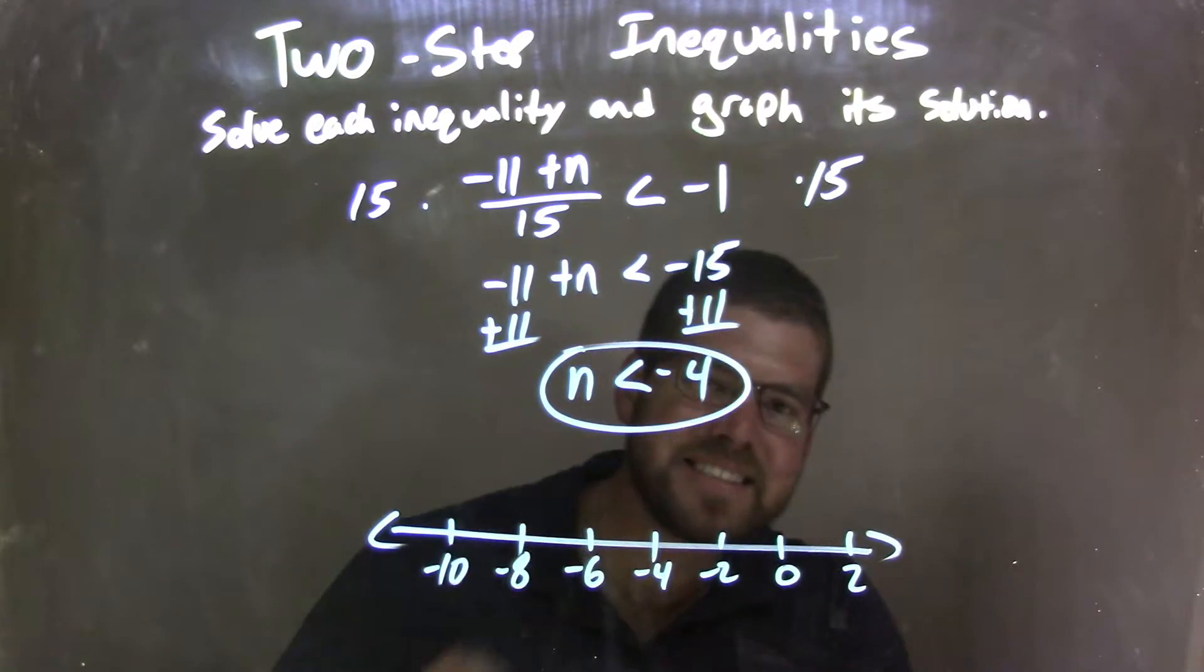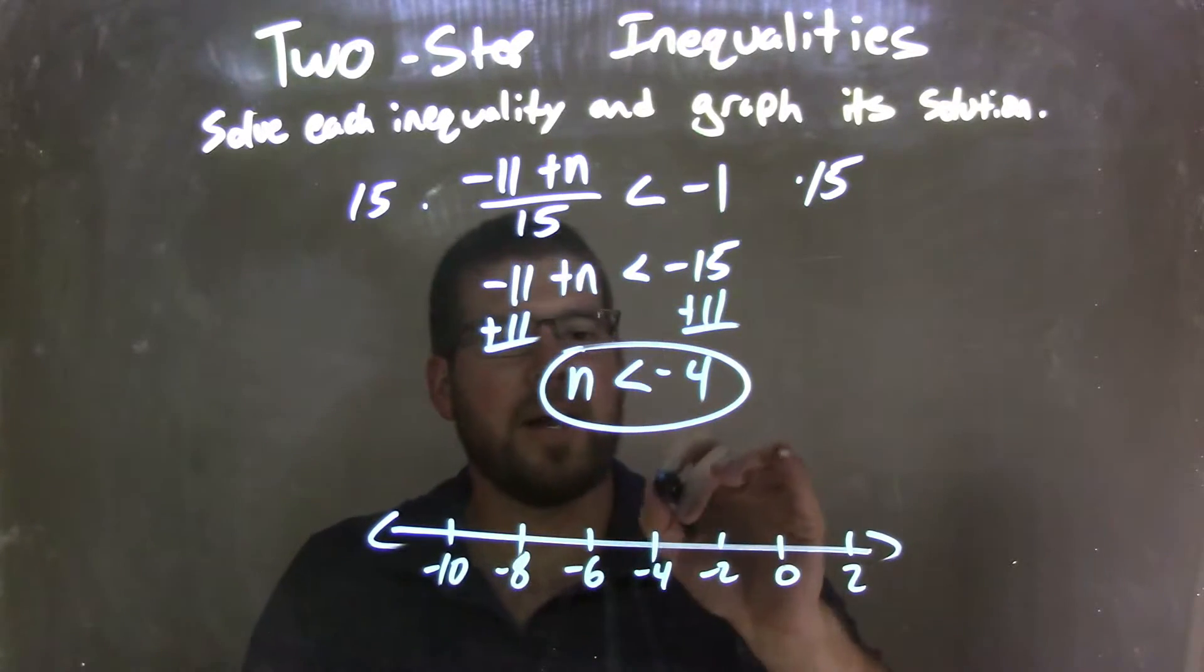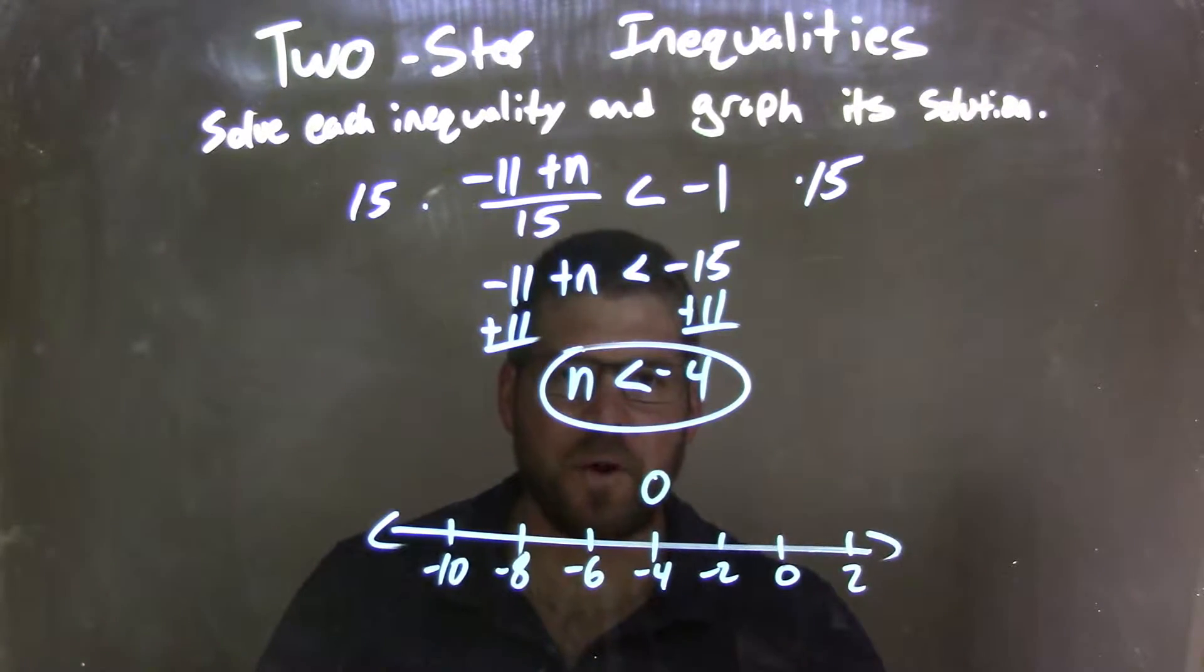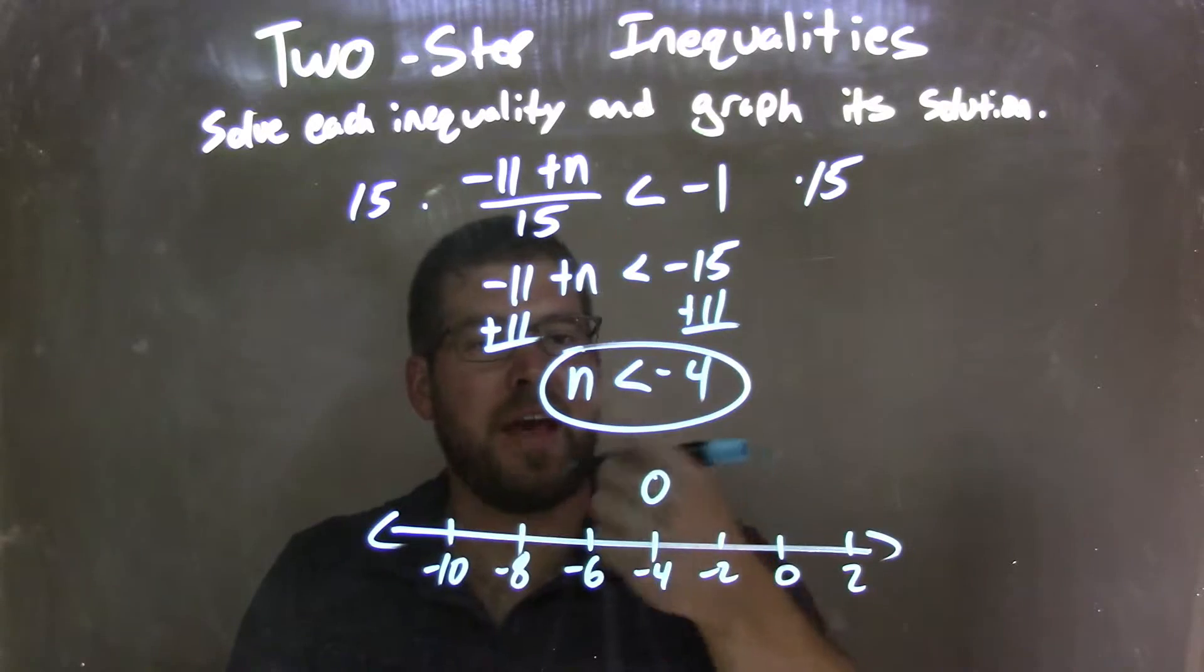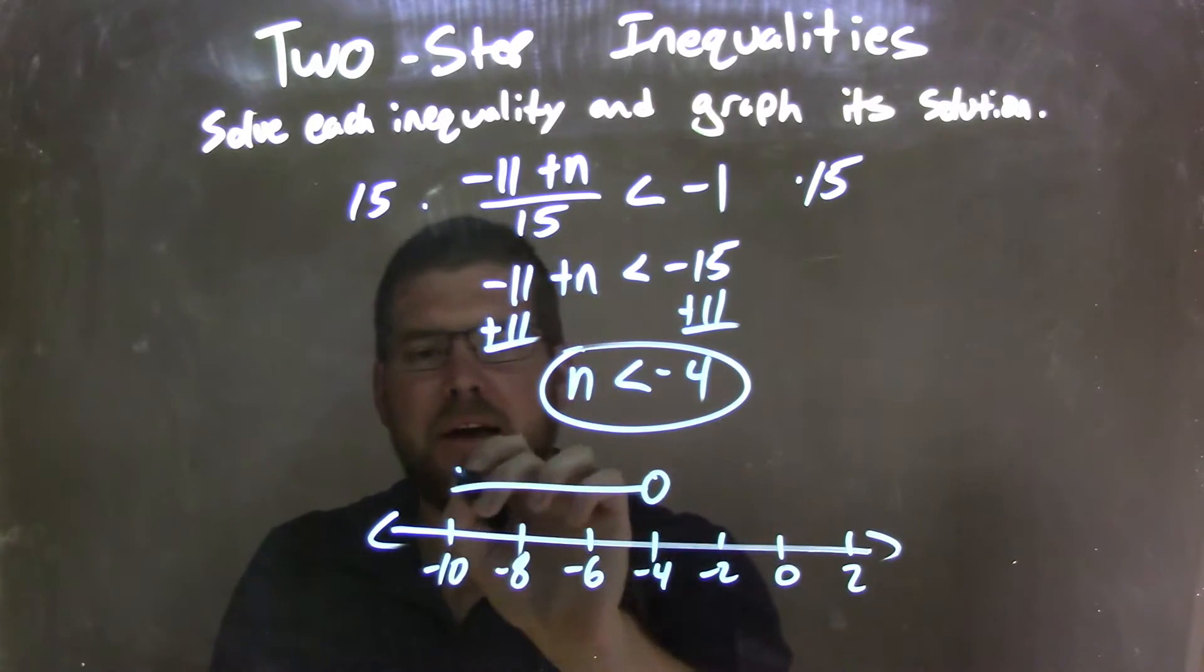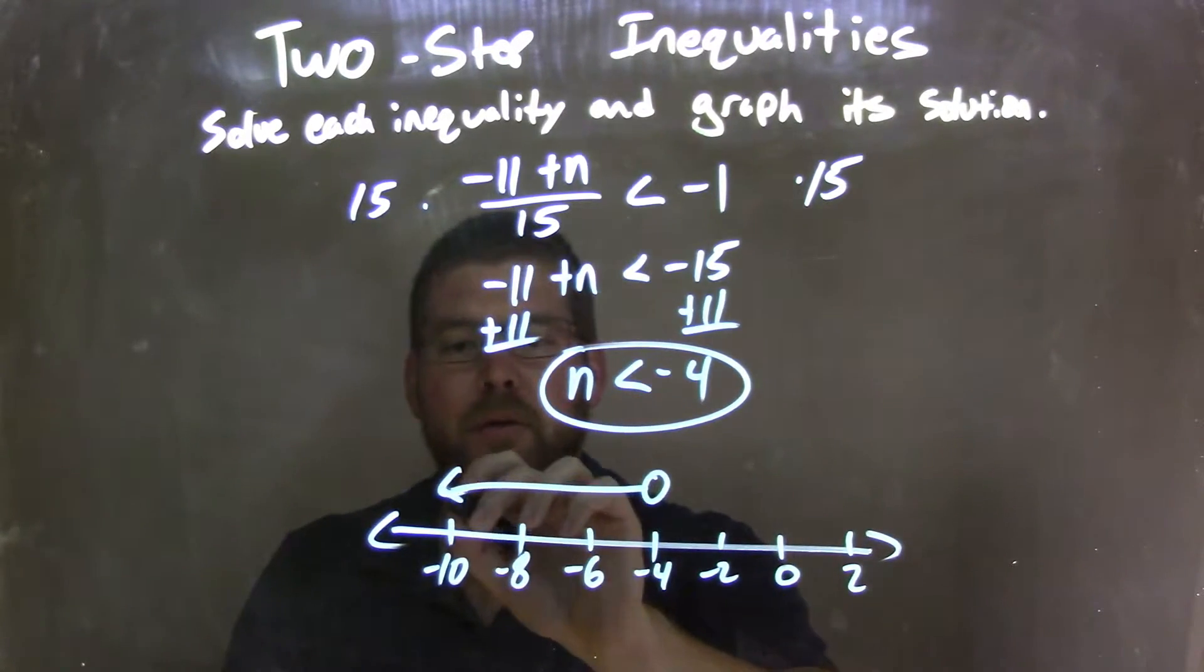Since n is less than negative 4 and not equal to it, I need an open circle at negative 4. Then, since it's less than, n is less than negative 4, my arrow goes to the left. And there we go, a better arrow there.